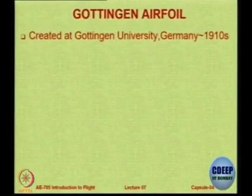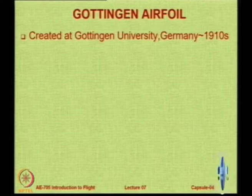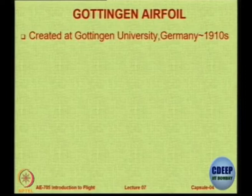Another interesting series is the Gottingen aerofoils, created at a university in Germany mainly through wind tunnel testing — in 1910 CFD was not available, so these were painstakingly developed through very careful wind tunnel testing. They have one-digit, two-digit, and three-digit numbers. For example, the Gottingen 622 aerofoil has an almost flat bottom with slight curvature at the front and good curvature on the top. What these digits mean — whether the numbers 6, 2, and 2 in Gottingen 622 mean something, just as each number in the NACA series means something — is something students are requested to find out and upload on Moodle.